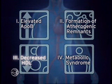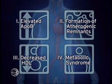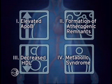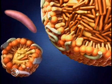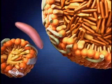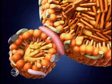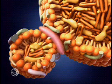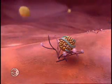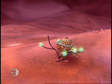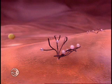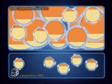Decreased HDL may occur independently, but more often it is associated with elevated triglyceride-rich ApoB particles, as in atherogenic dyslipidemia. The presence of triglyceride-rich ApoB remnants facilitates CETP-mediated exchange of triglycerides with HDL's cholesterol esters. As HDL's core composition changes, its acquired triglycerides are susceptible to hydrolysis by hepatic lipase, which reduces its size to a particle that is rapidly catabolized, resulting in reduced plasma concentrations of HDL.